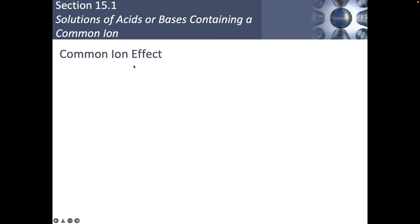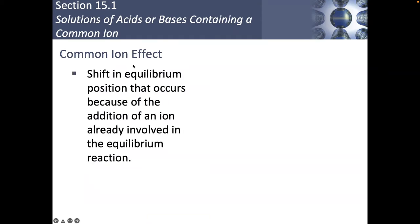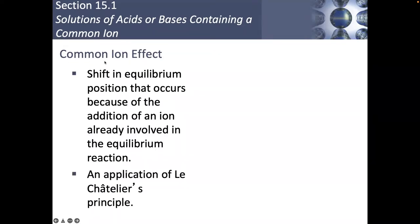The common ion effect is the very first section that we're going to be looking at here. The common ion effect is really just an application of Le Chatelier's principle. Le Chatelier's principle says that if we have a reaction that's in equilibrium and I decide to apply a stress to that particular reaction, the reaction will naturally and automatically shift in a way to lessen the stress. The common ion effect is what happens when there is a common ion between something you are adding as a stress to a reaction that's already in equilibria.